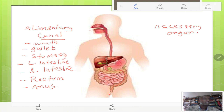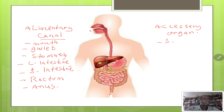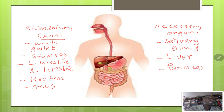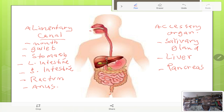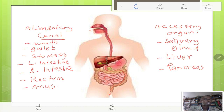The accessory organs include the salivary glands, the liver, and the pancreas. These are called the accessory organs. Also, the teeth — which are found in the mouth — are sometimes included here as well.